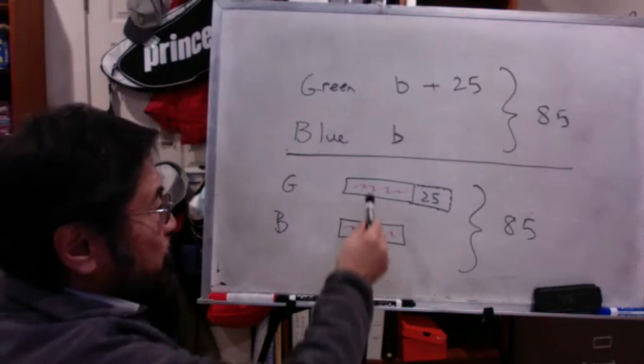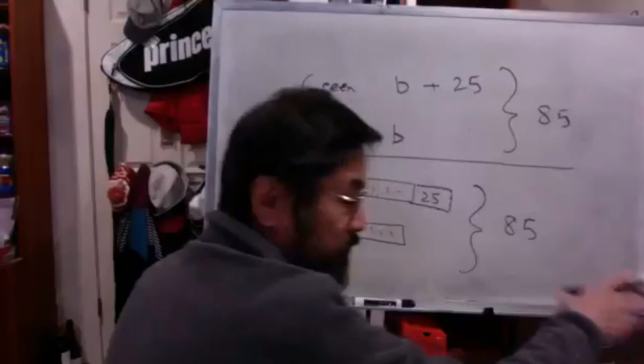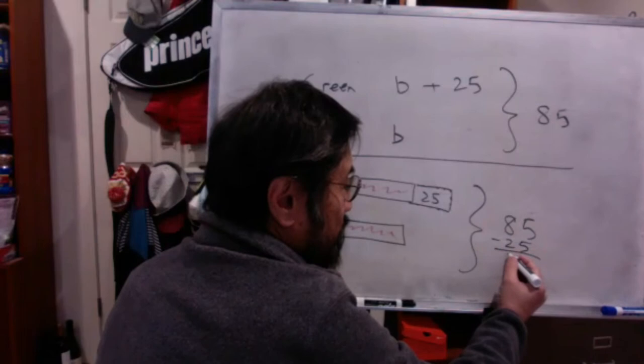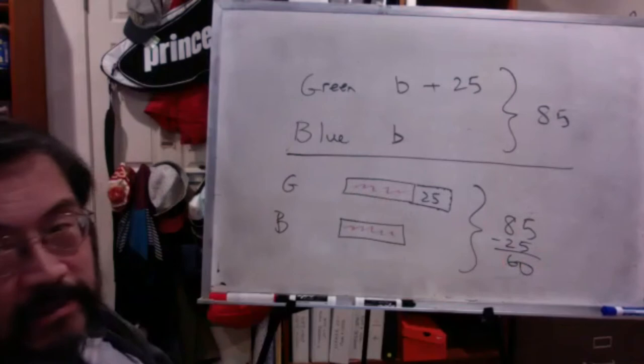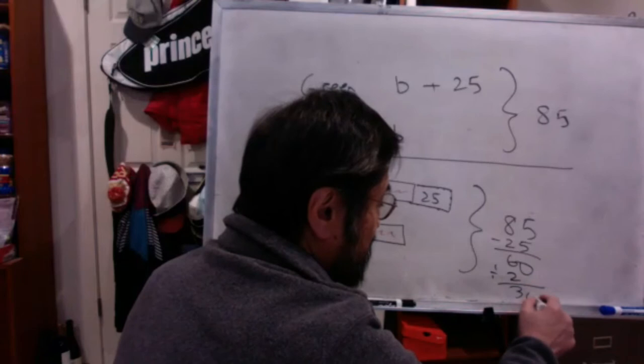So this plus this is 85. So like Tanishka said, we take the 85, we subtract 25, we get 60. So we know this and this equals 60, right? So we divide by 2 to get 30. So that means this is 30 and this is 30.